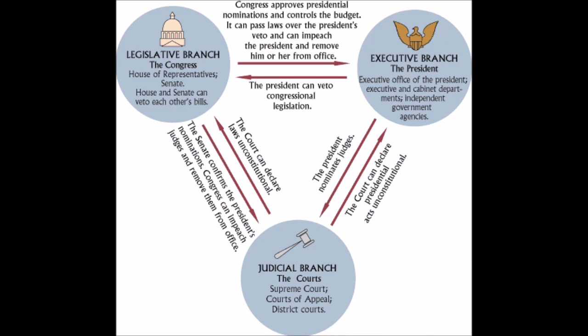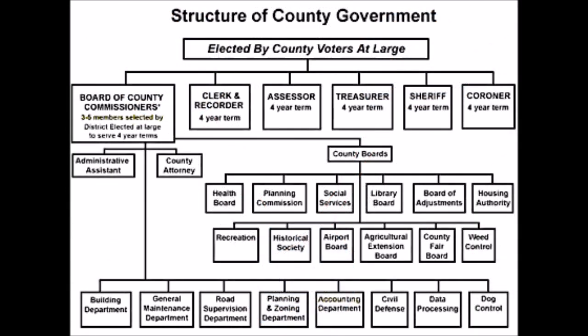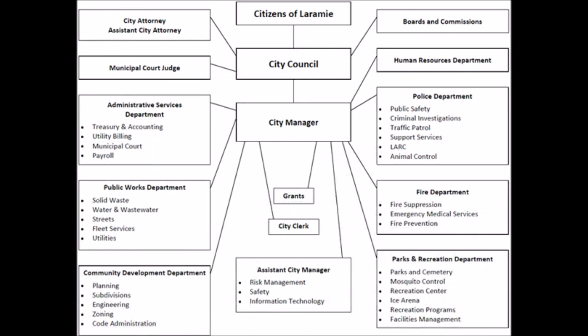You must keep in mind that the separation of powers are not just horizontal, but also vertical, by which I mean that each American government has its own three branches, generally speaking. State governments have their own legislatures, governors, and judiciary. County governments have commissioners, sheriffs, and courts. Municipalities, that is, city governments, commonly have city councils, mayors, and judges.